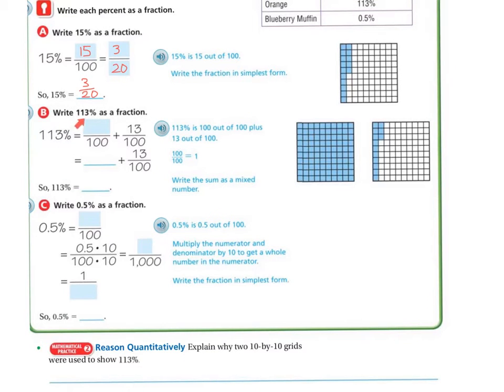The next one asks us, write 113% as a fraction. Remember if I'm doing my 10 by 10 frames from yesterday, I'm going to color in one whole, and then I'm going to color in 13 of the other one. So that means I'm going to have one whole plus 13 of another one. I'm going to convert this 100 over 100 to one whole plus 13 over 100. My answer is going to be 1 and 13 one-hundredths.